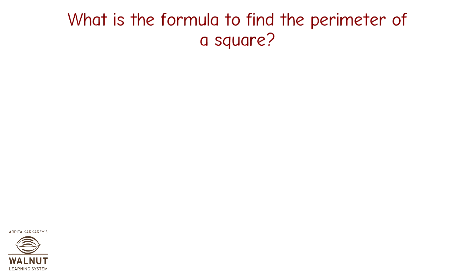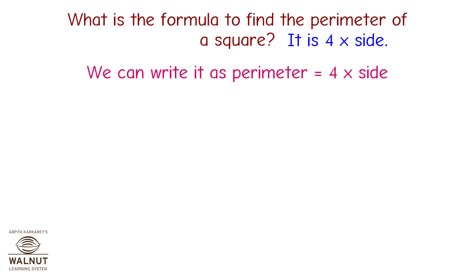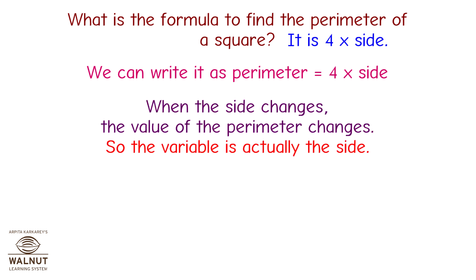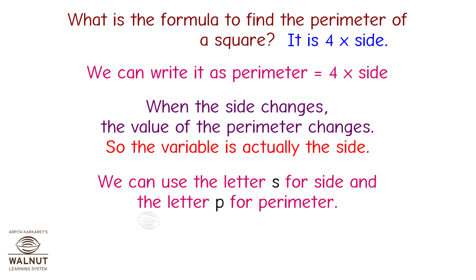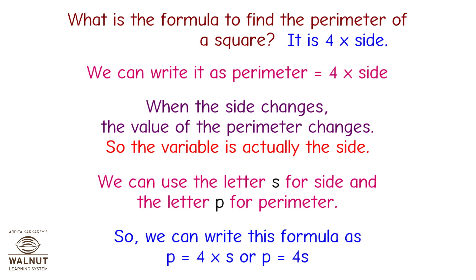What is the formula to find the perimeter of a square? It is 4 into side. We can write it as perimeter is equal to 4 into side. When the side changes, the value of the perimeter changes. So the variable is actually the side. We can use the letter S for side and the letter P for perimeter, and write this formula as P is equal to 4S.